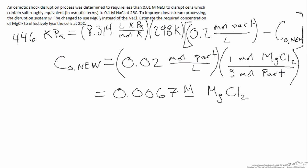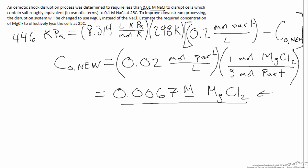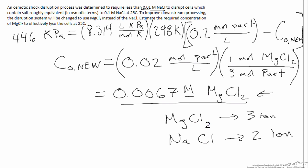Now we ask: does this final answer make sense? We can compare it to what we started with — 0.01 molar sodium chloride disrupts the cells. Since magnesium chloride produces more ions per mole than sodium chloride, we should require less magnesium chloride. Doing a quick mental check: MgCl₂ gives 3 ions per mole and NaCl gives 2 ions per mole, so we should need roughly two-thirds as much magnesium chloride to achieve the same osmotic pressure — and that is exactly what we find.